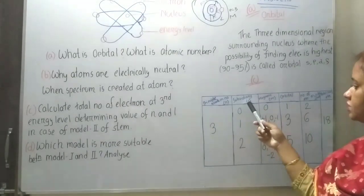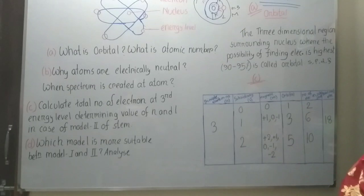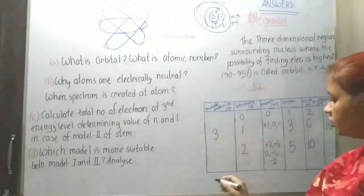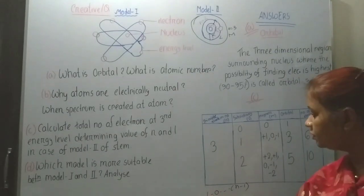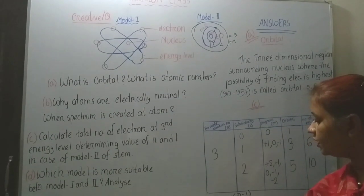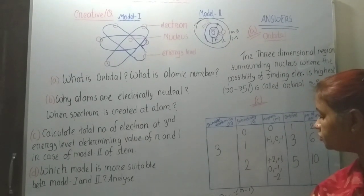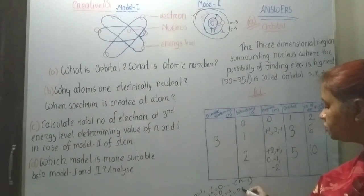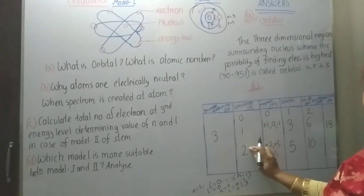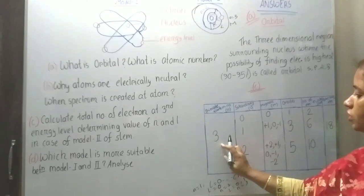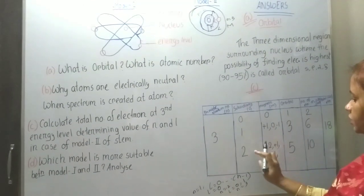Now come to the subsidiary quantum number. The subsidiary quantum number is expressed by small l, and its value ranges from 0 to n minus 1. Whenever n equals 1, l equals 0. Whenever n equals 2, l equals 0 and 1. Whenever n equals 3, l equals 0, 1, and 2. So for n equals 3, there are three subsidiary quantum numbers: 0, 1, and 2.